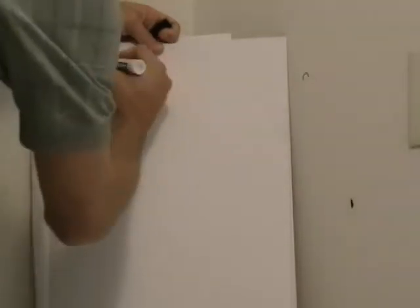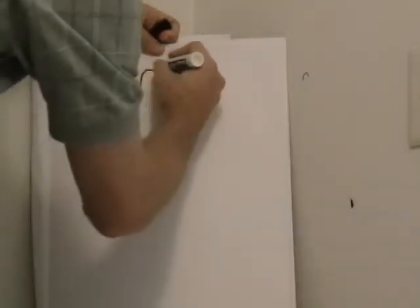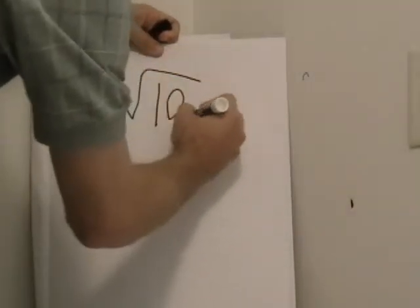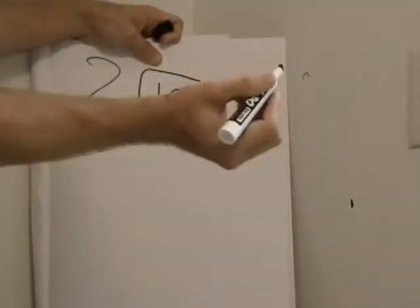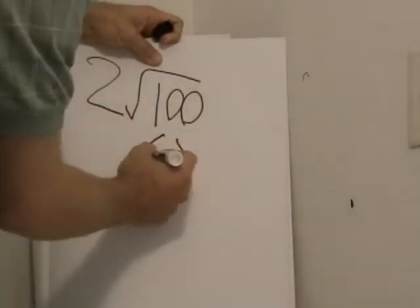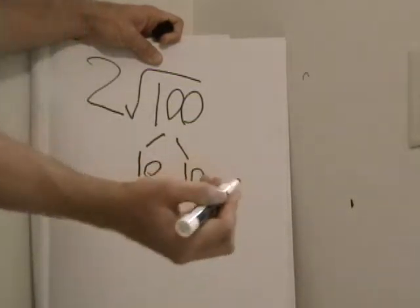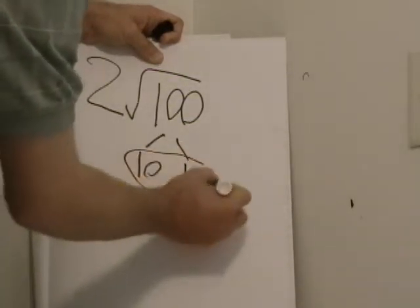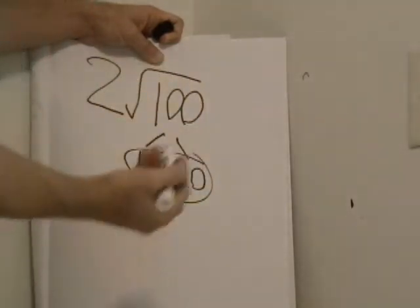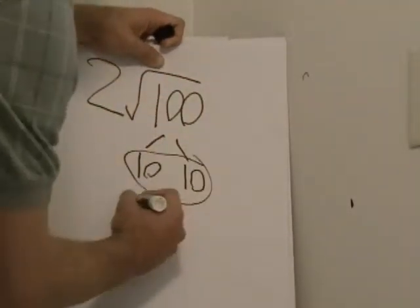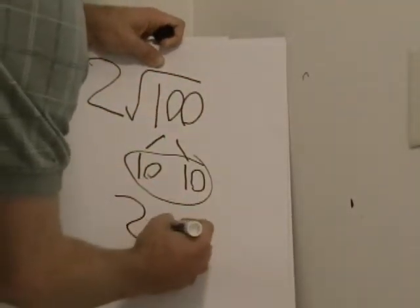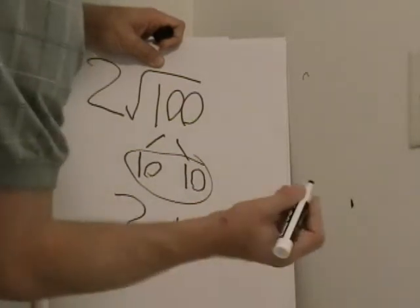Let's try 2 times the square root of 100. We'll break down 100 and we'll find 10 times 10. That's easy enough. But we're going to have to take a 10 out of here and multiply it by 2. Which easily we know equals 20.